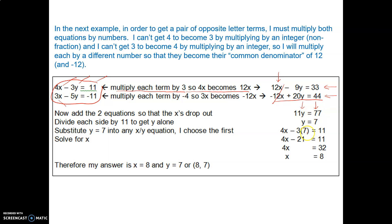Substituting y equals 7 into the first equation: 4x minus 3 times 7 equals 11, so 4x minus 21 equals 11. Adding 21 to both sides gives 4x equals 32. Dividing by 4, x equals 8. Therefore, x equals 8 and y equals 7 is the solution that will make both equations true.